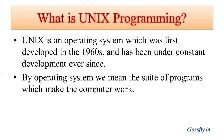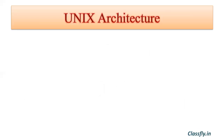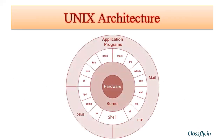UNIX provides access to resources like CPU, memory, disks, modems, etc. It is a stable, multi-user, multitasking system for servers, desktops, and laptops. The last point describes features of UNIX programming which we will study later. Next, let us understand what UNIX architecture is and how it looks. In general, the UNIX operating system is made up of three parts: the kernel, the shell, and the programs.